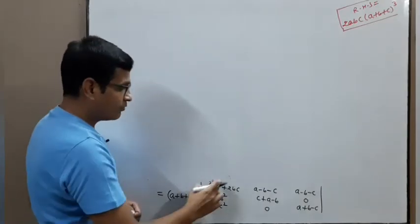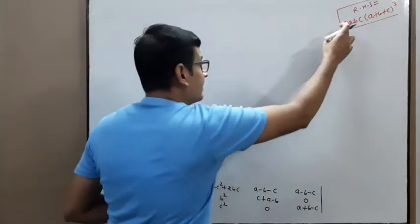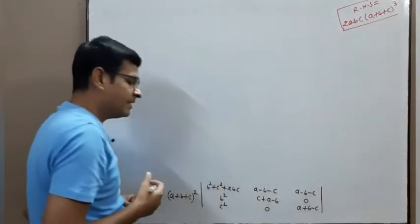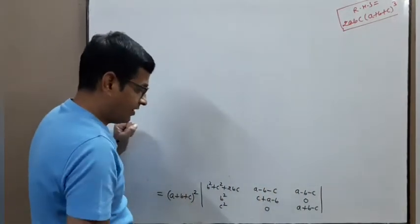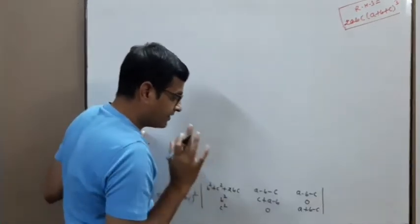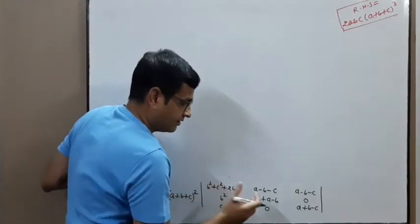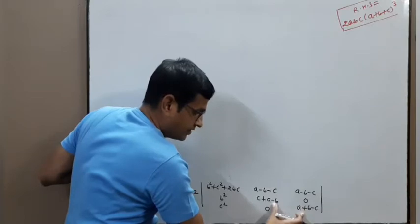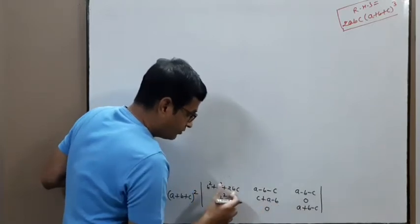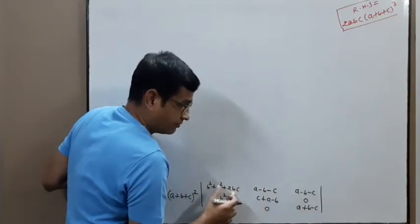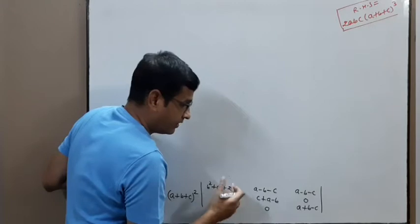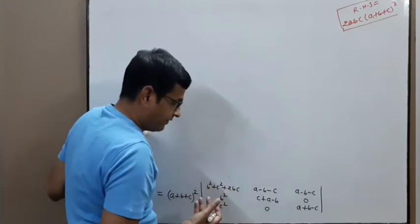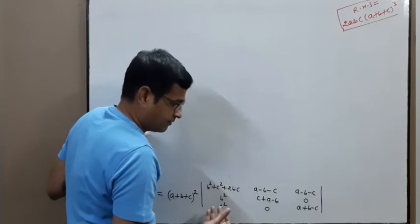We need to show the value is 2abc(a+b+c). If we simply expand, we get 3×3 = 9 terms, and 9×3 = 27 terms — a very large calculation. So first simplify to get maximum zeros, then expand. To get more zeros, apply R1 → R1 − R2 − R3.